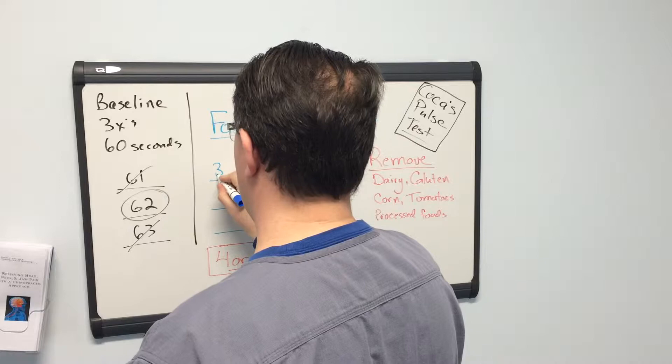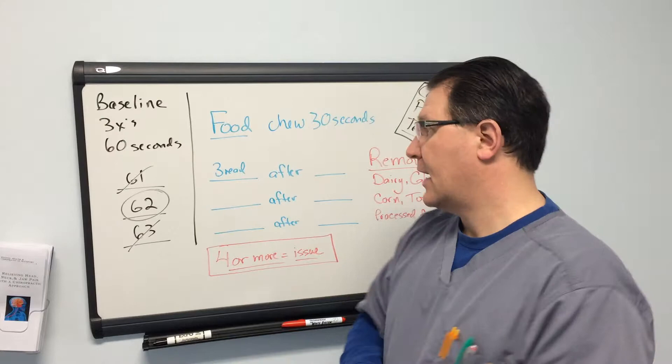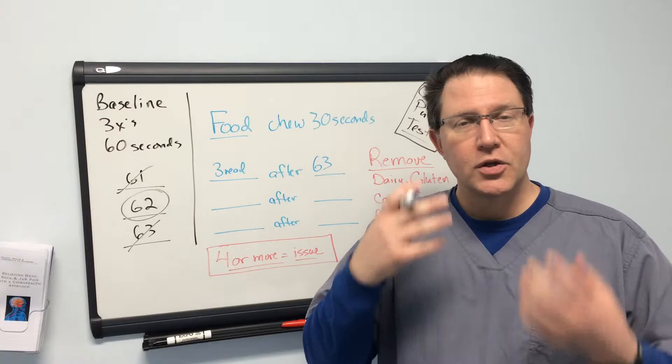And then you're going to test that food. And let's just say for example, we test bread. And you chew that up for 30 seconds, you're going to keep that in your mouth and check your pulse rate. And you're going to write that down. And let's say maybe you have a 63.